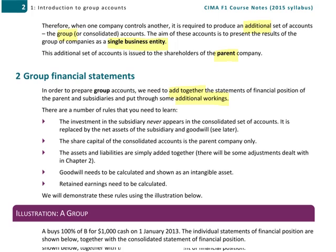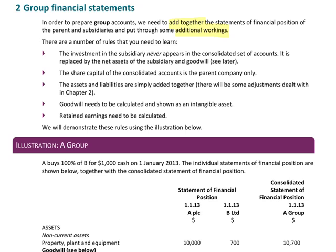There are some basic rules to learn. The first rule is that the investment in the subsidiary seen in the individual company accounts of the parent company never appears in the consolidated set of accounts. Because we're preparing these accounts as though the companies are a single business entity, you can't invest in yourself. What the investment is replaced by are the net assets of the subsidiary, which we add together, and something called goodwill.